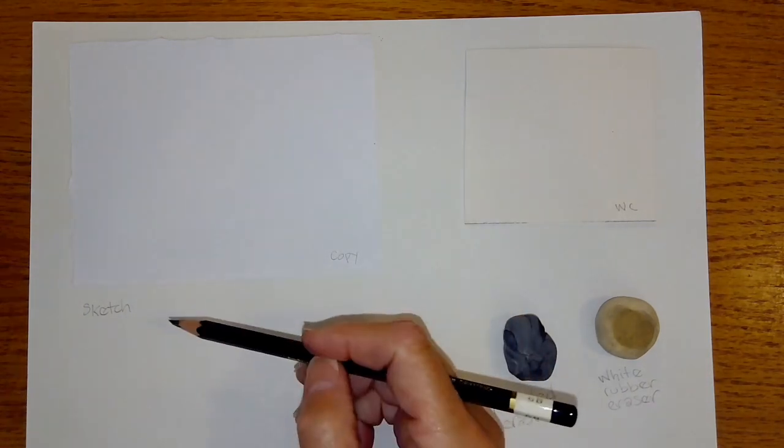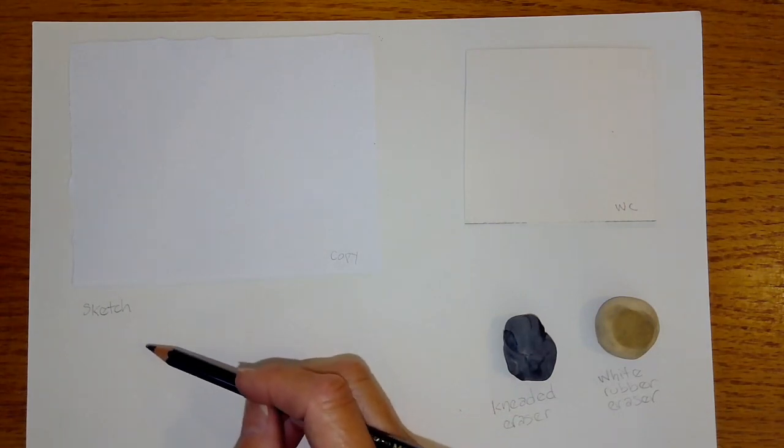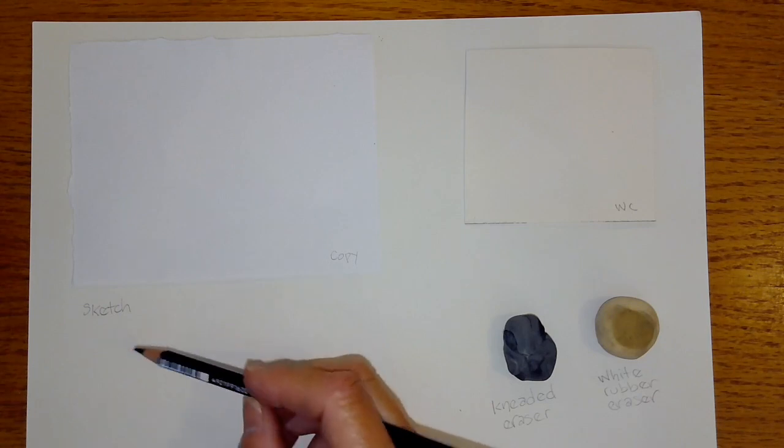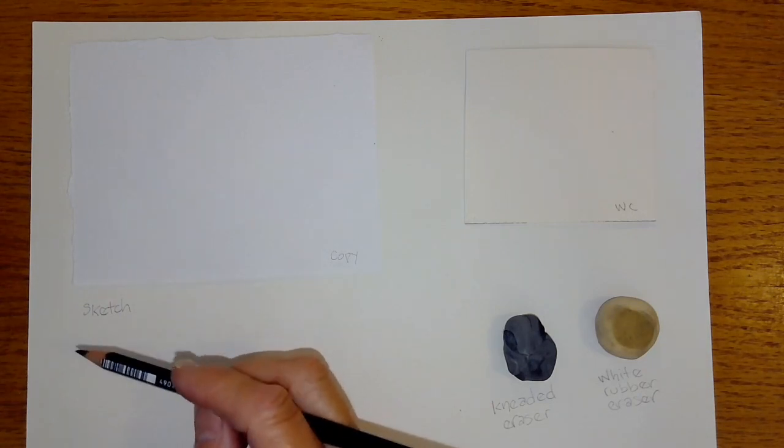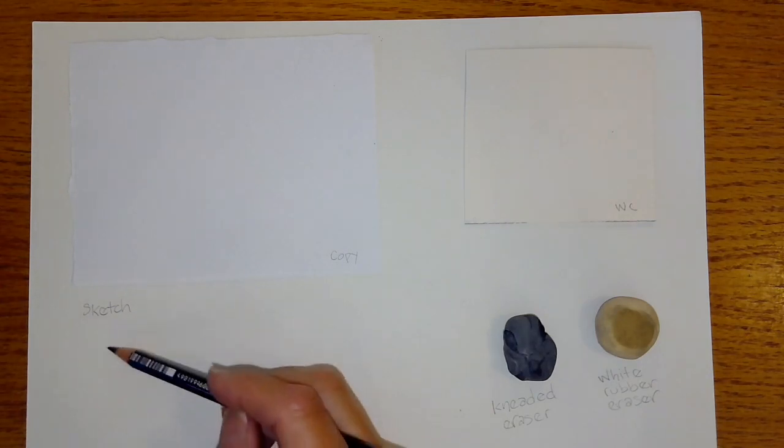All right, this is going to be fun. One of my favorite things is feeling how a pencil glides across the page. With my 6B I'm going to start on the sketch paper, and like lesson one, we're not drawing anything.